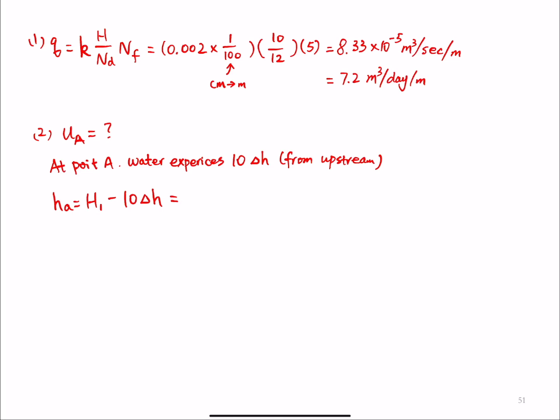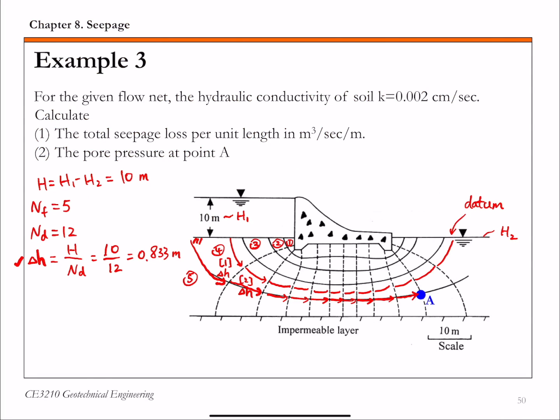And the initial head at upstream is 10 meters above the datum, the reference datum, at the ground surface, minus 10 times delta H, which we calculated is 0.833 meters.